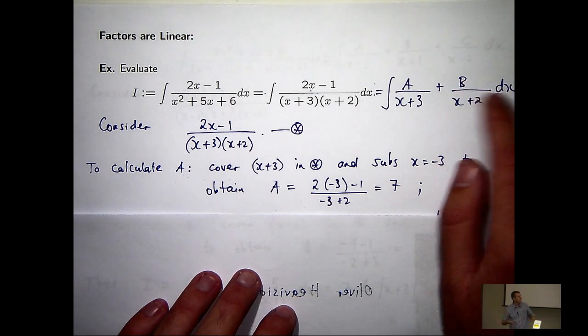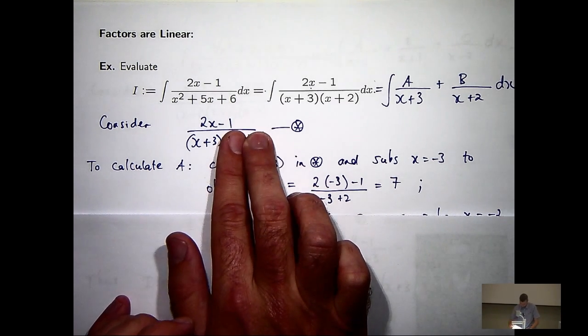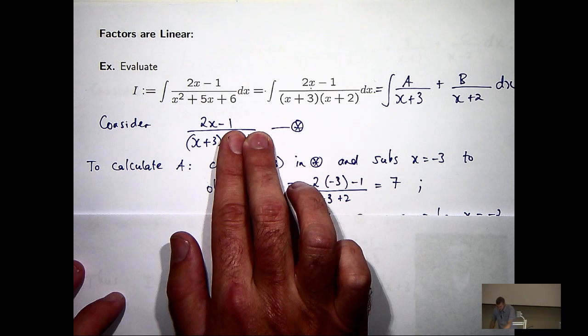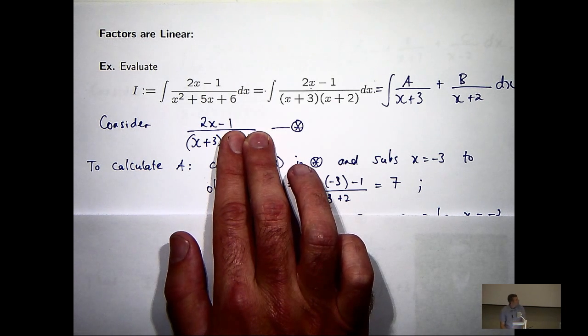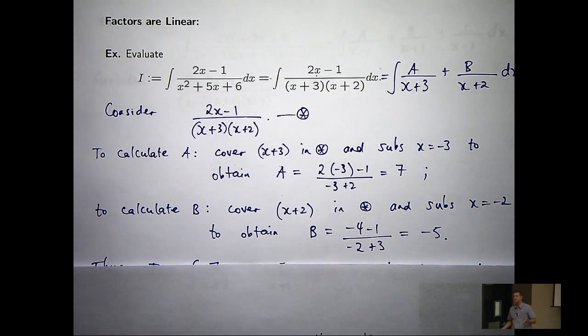So to calculate B, I see B lies above x plus 2. Go back here, cover up the bracket containing x plus 2, and substitute in x equals minus 2. That will give you B equals minus 5.